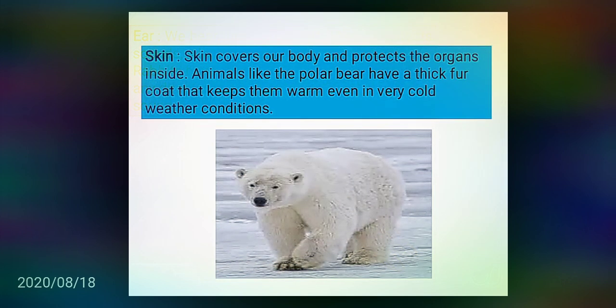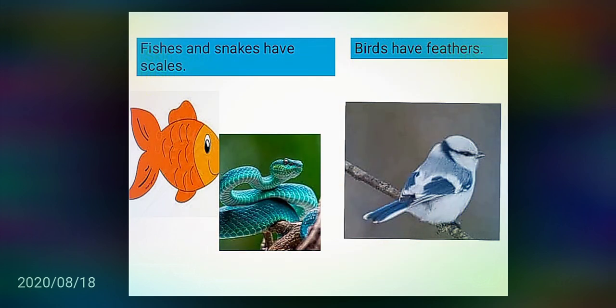Skin: Skin covers our body and protects the organs inside. Animals like the polar bear have a thick fur coat that keeps them warm even in very cold weather conditions. Fish and snakes have scales. Birds have feathers, as you can see in pictures.